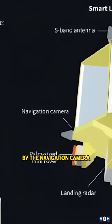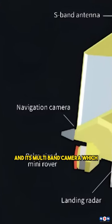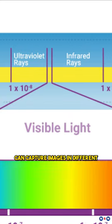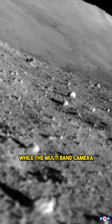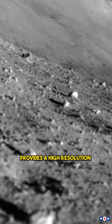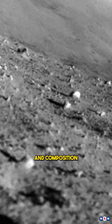These images were taken by the navigation camera and its multiband camera, which can capture images in different wavelengths of light. This camera provides a wide-angle view of the surroundings, while the multiband camera provides a high-resolution view of the surface features and composition.